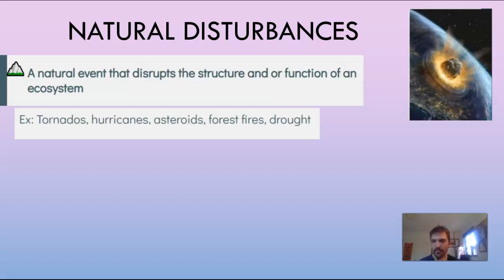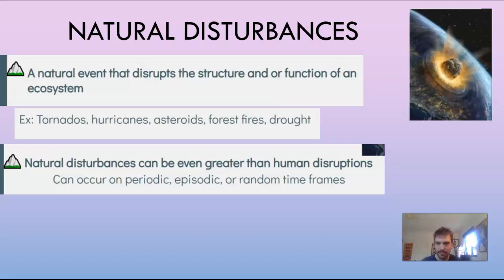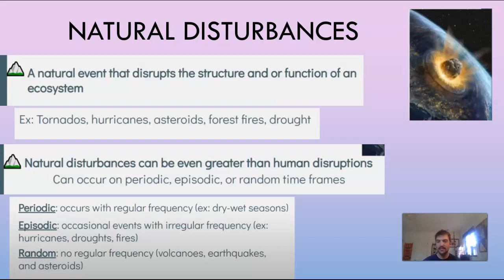Natural disturbances can be even greater than human disruptions, and they can occur on periodic, episodic, or random time frames. Periodic means recurring during a period of time — for example, dry and wet seasons. Episodic refers to occasional events with irregular frequency, like hurricanes, droughts, and fires. Random means no regular frequency at all — volcanoes, earthquakes, and asteroids; you never know when those are going to happen.